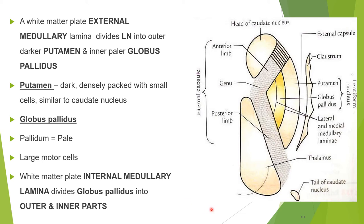A white matter plate called the external medullary lamina, or lateral medullary lamina, divides the lentiform nucleus into an outer darker putamen and an inner paler globus pallidus. The putamen is made up of densely packed small cells, similar to the caudate nucleus. The globus pallidus is made up of large motor cells and is further subdivided into outer and inner parts by the internal medullary lamina, or medial medullary lamina.